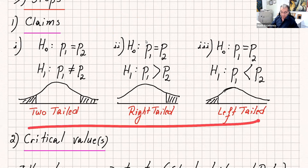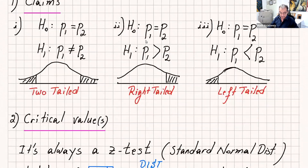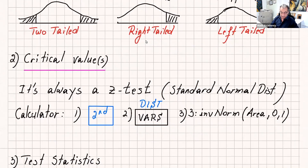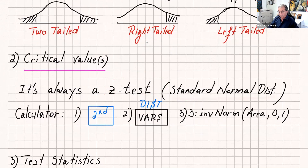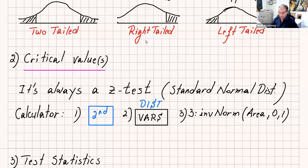Once you read the problem and write the claim, next is to find the critical value or critical values. When you deal with one or two proportions it's always a z-test, so the critical values come from the standard normal distribution — these are z values. Use your calculator: go to second function, distribution, then the third one, inverse norm. You put the area to the left, 0 and 1, and you can get your critical value.